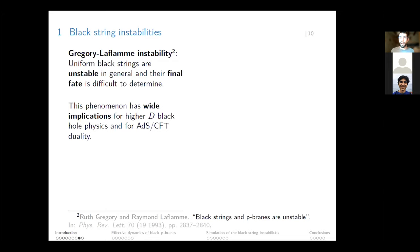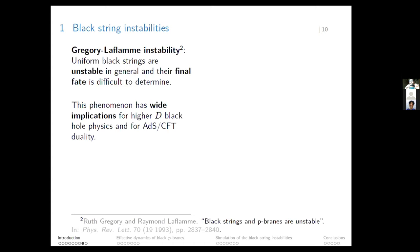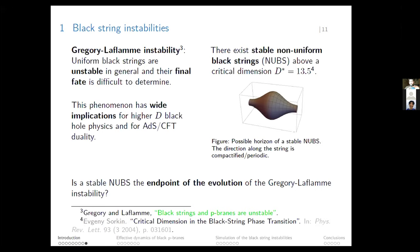An important concept for this presentation is the instability of black strings, found by Ruth Gregory and Raymond Laflamme. They found that uniform black strings are in general unstable: they develop ripples that grow in their event horizons. However, it is difficult to say how these ripples will grow and what will be their final fate, even though this phenomenon has wide implications for physics of black holes in higher dimensions and for the AdS/CFT duality. At the same time, there are stable non-uniform black strings above a critical spacetime dimension, which can be around d equals 14.